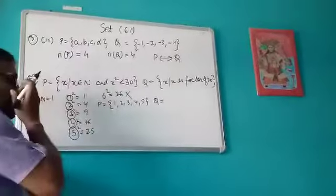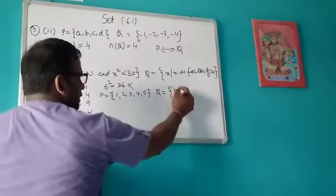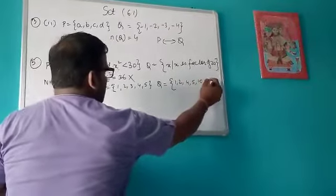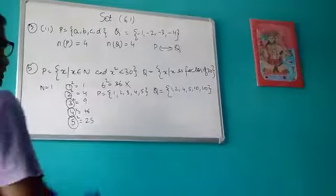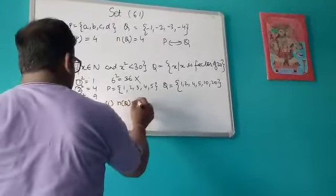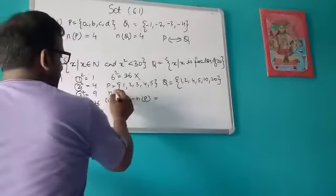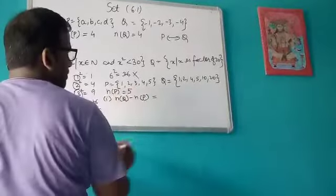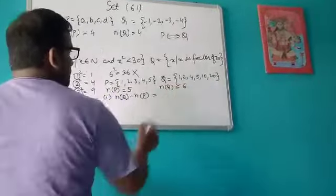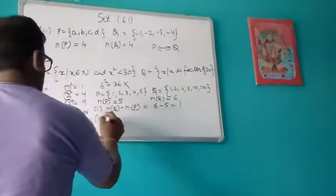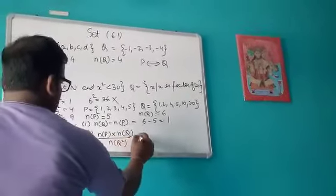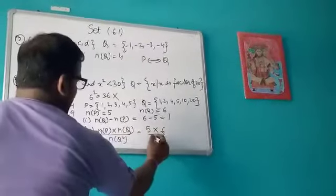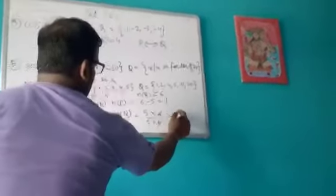For Q, the factors of 20 are 1, 2, 4, 5, 10, 20. So n(P) = 5 and n(Q) = 6. Then n(Q) − n(P) = 6 − 5 = 1. For the second expression, n(P) × n(Q) divided by n(Q²) — with n(P)=5 and n(Q)=6 — gives 5×6 divided by 36.